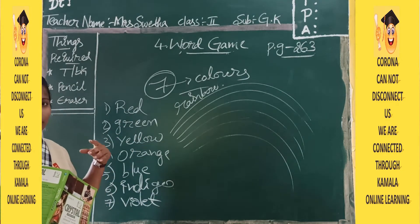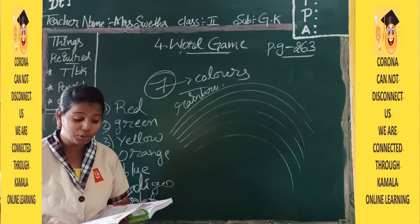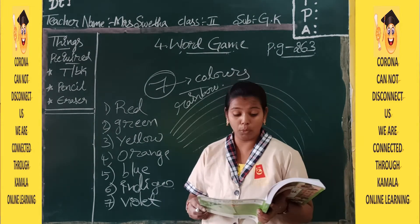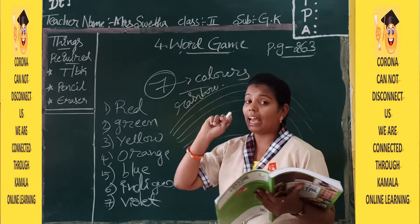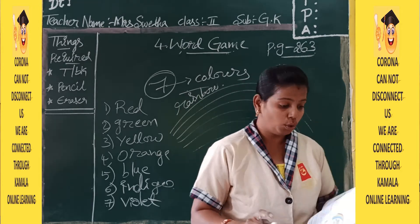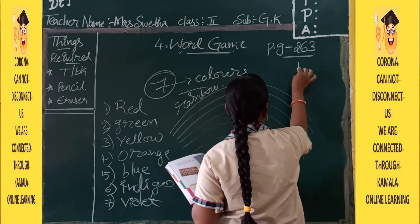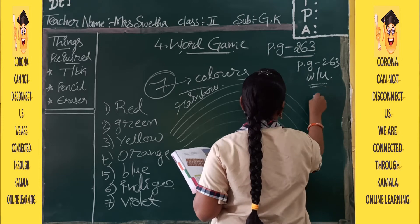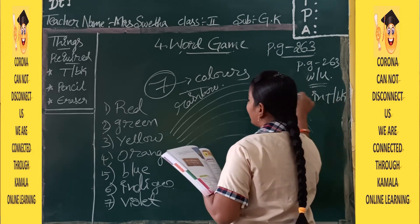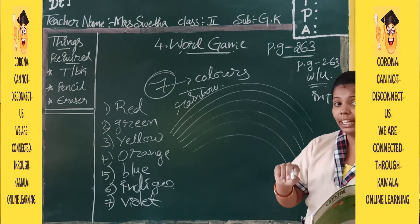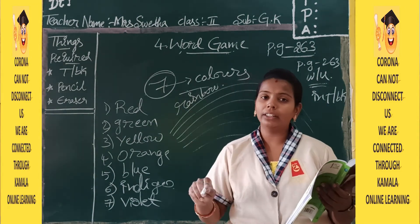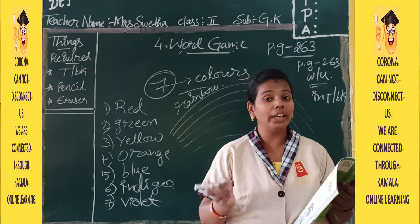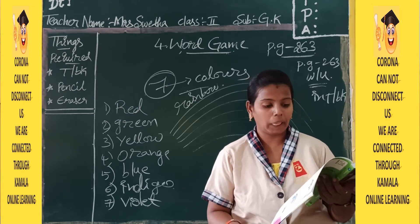Even I like the rainbow very much. So what you have to do now: in the warm-up they are asking you to name the 7 colors of the rainbow. Today's homework will be this one. In page number 263 you have the warm-up, and you have to write it in the term book itself. I have explained the colors already — you can check and do it after this video.